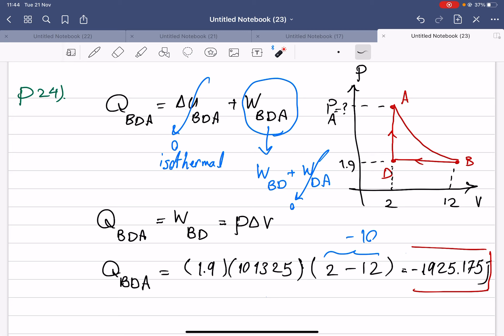It's isothermal totally, and the work will be W_BD plus W_DA. W_DA is isovolumetric so it will be zero. Finally, we have a very simple solution. If we calculate the work done in this area with the formula P delta V, we can easily calculate the whole heat.